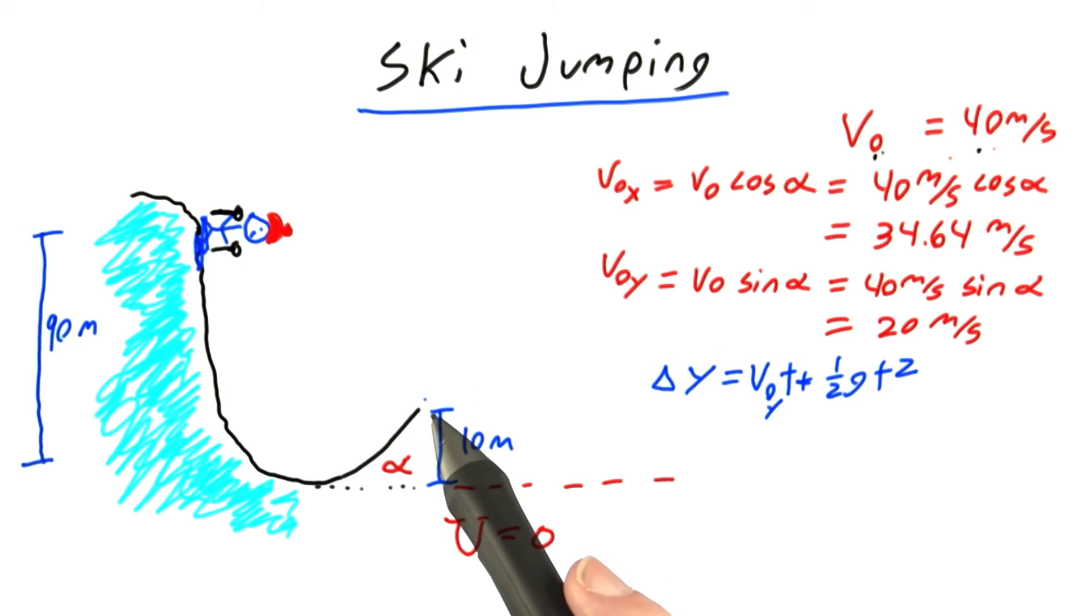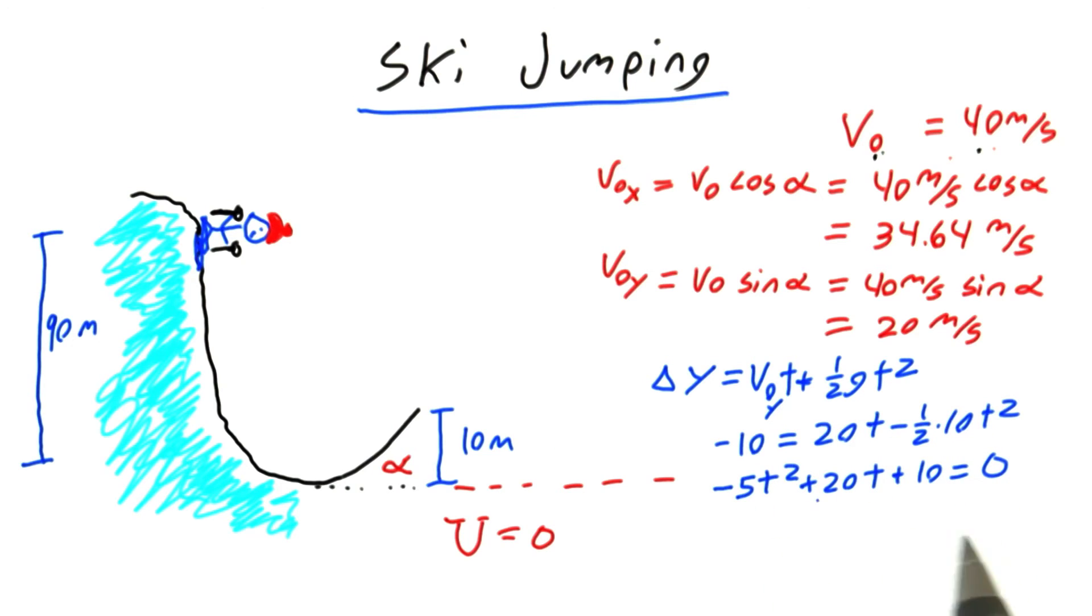That's when his change in y will be minus 10, since he's at 10 up here and then goes down to 0, a change of minus 10. Doing a little algebra, I arrive at this quadratic equation.